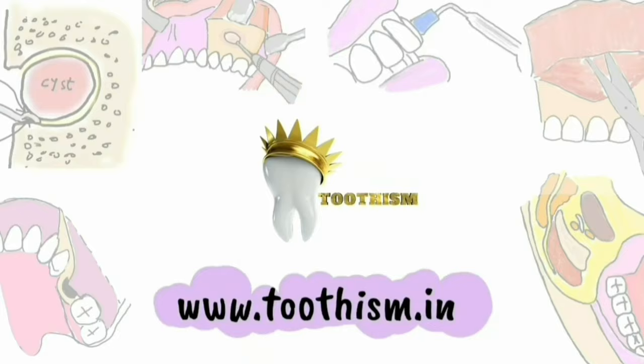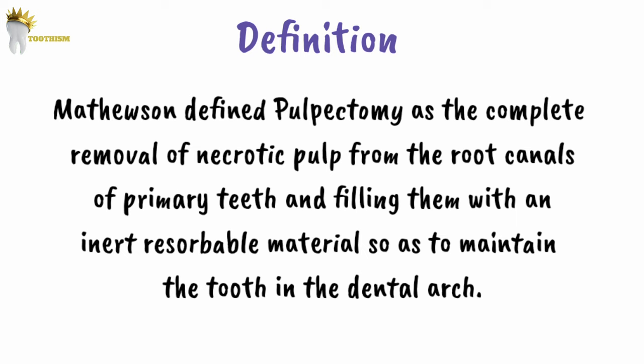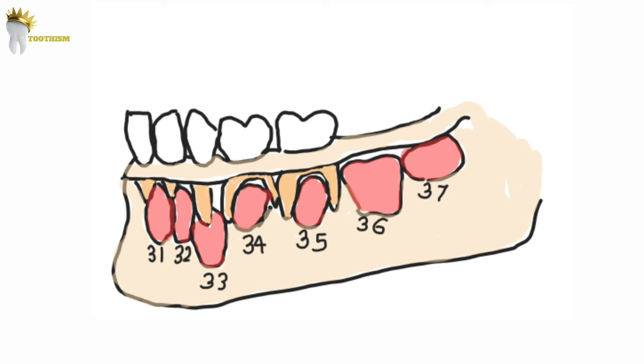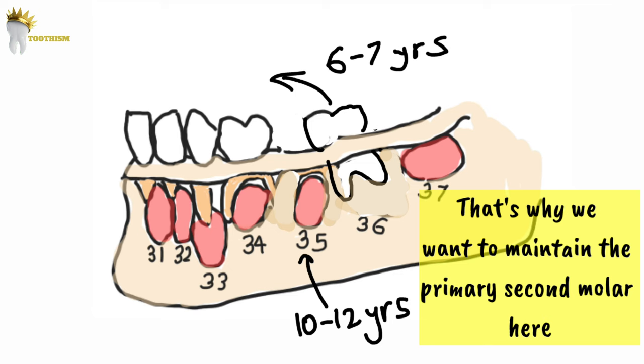Let's get started with pulpectomy. Mathewson defined pulpectomy as the complete removal of the necrotic pulp from the root canals of primary teeth and filling them with an inert resorbable material so as to maintain the tooth in the dental arch. The basic idea is that we want to maintain the primary tooth that would otherwise be lost, since premature loss can result in loss of space for the permanent tooth, leading to future problems during the eruption phase.